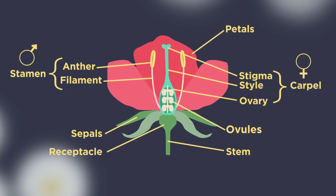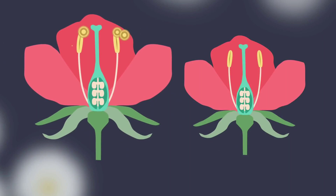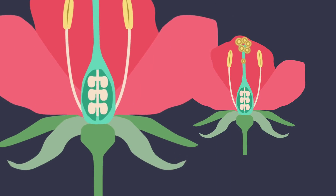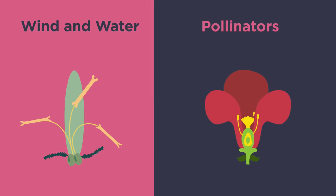Within the ovary, ovules produce female gametes. So how does pollination work? Pollination is the transfer of pollen from the male anther of one flower to the female stigma of another. Flowers can be pollinated in different ways: by wind and water, or by pollinators such as insects, birds, and other animals.